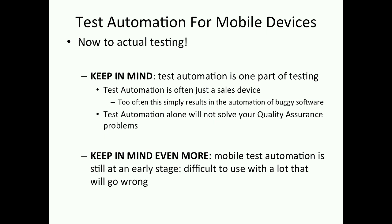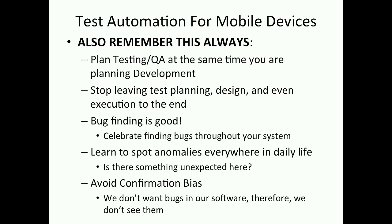Keep in mind: mobile test automation is still at its early stage. I've got to admit, this isn't easy — a lot goes wrong here. Starting with Android is my suggestion. If we bring in iOS, there will be just too many problems. Plan testing and QA at the same time you are planning development. We have to stop leaving test planning, design, and execution to the end. With the whole idea of DevOps and continuous development, there's also continuous testing going on at the same time. Bug finding is good — we need to celebrate finding our bugs throughout the system.